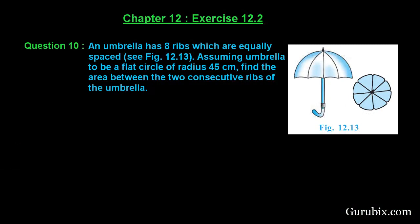Welcome friends, let us solve question number 10 of exercise 12.2 of chapter 12. The question says: an umbrella has eight ribs which are equally spaced (see figure 12.13). Assuming the umbrella to be a flat circle of radius 45 centimeters, find the area between two consecutive ribs of the umbrella.